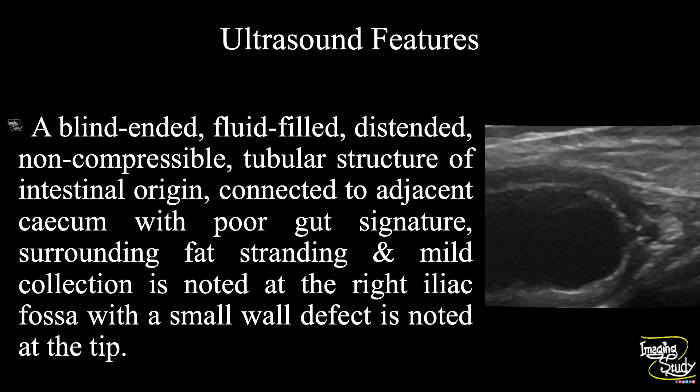In summary, a blind-ended, fluid-filled, distended, non-compressible tubular structure of intestinal origin connected to the adjacent cecum with poor gut signature, surrounding fat stranding, and mild collection is noted at the right iliac fossa, with a small wall defect at the tip of the lesion, suggesting a case of gangrenous appendicitis with perforation.